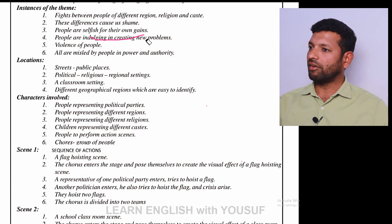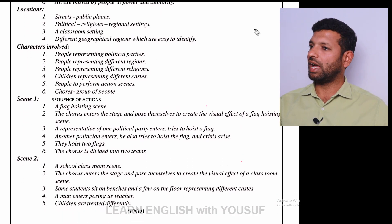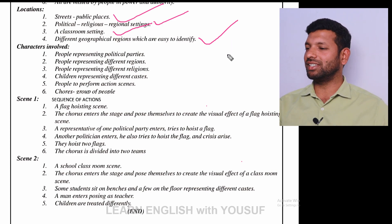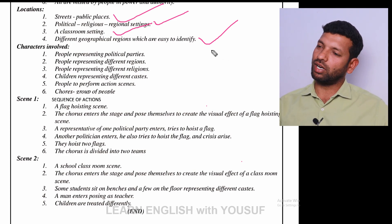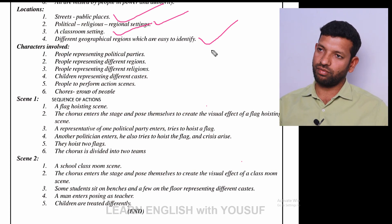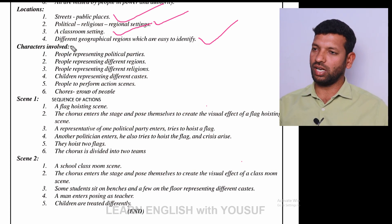After that, locations — what are the locations available. For 'Plea for India': streets and public places, political, religious and regional settings, a classroom setting, and different geographical regions which are easy to identify. For 'Another Woman,' the locations are: vegetable market, the street, home interior, and again the street — after she commits suicide, she comes out and screams, after she is burnt up.